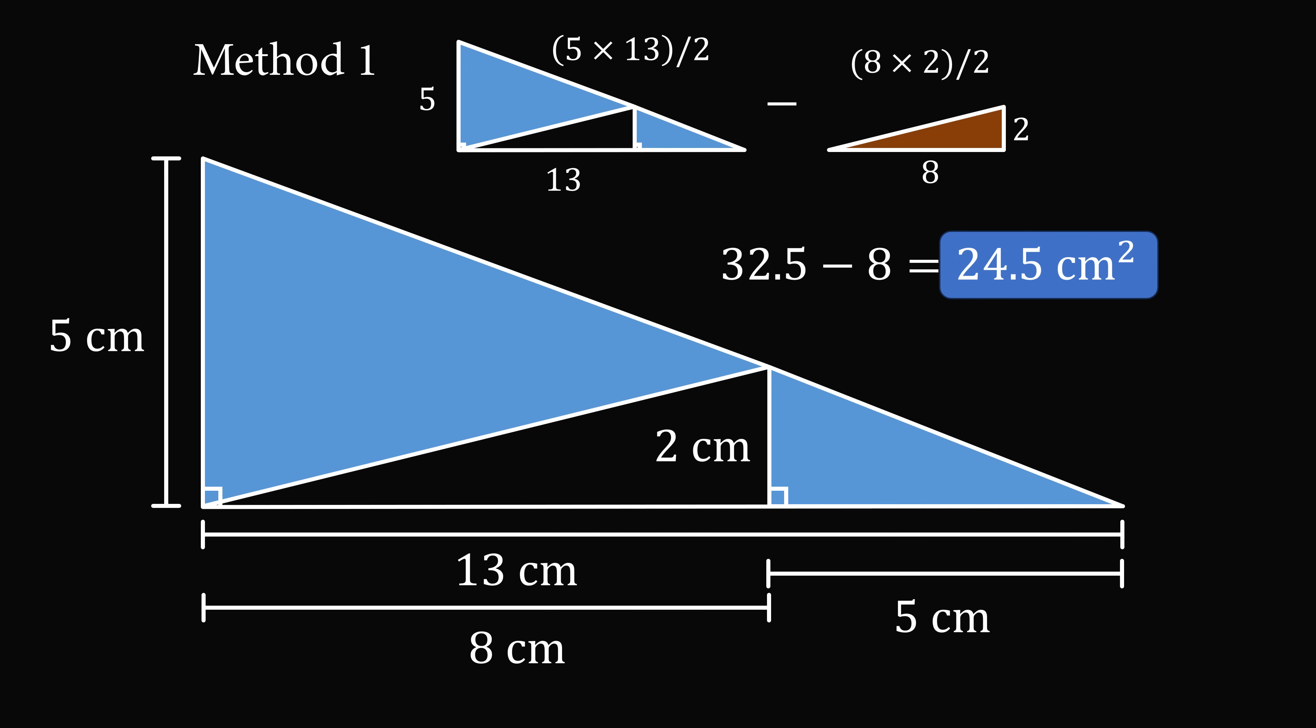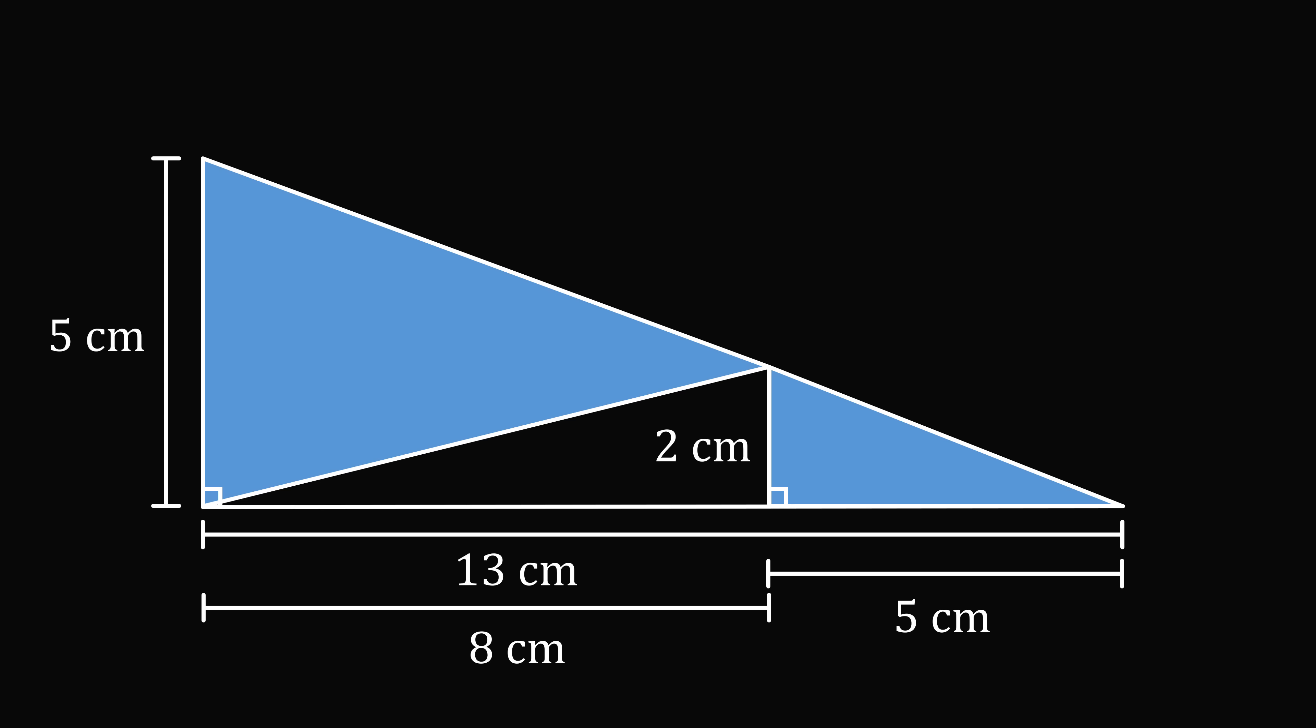What's wrong with method 1? Let's go back to this calculation. So a key assumption is that the entire diagram is a right triangle with a height equal to 5 and a base equal to 13. This is not true! The entire shape is not actually one single right triangle.